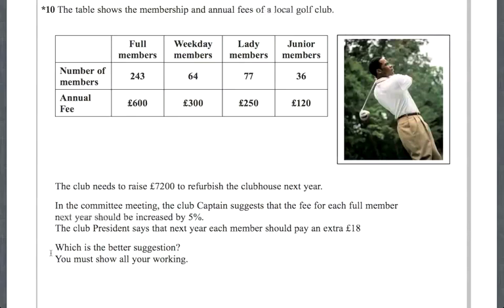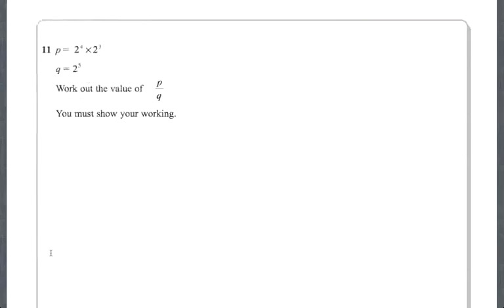Question 11 is an indices question. Some of you may quickly see that p = 2⁷ and q = 2⁵, so p ÷ q = 2² = 4. But if you just write 4 on the answer line, you'll get nothing — it could just be a guess. It says you must show your working, so show every step and then you'll get both marks.